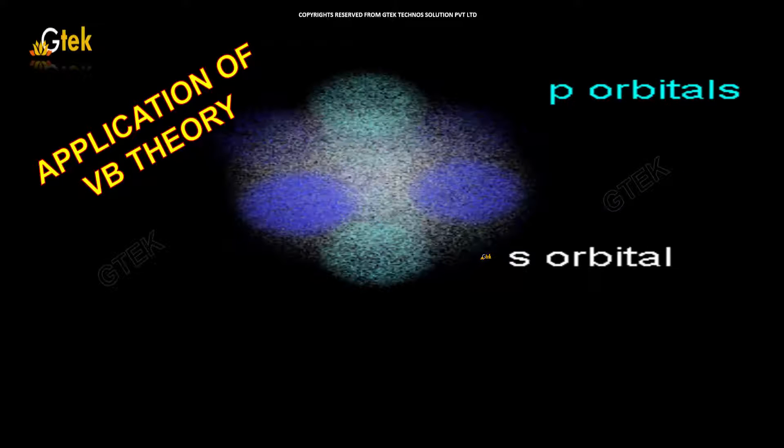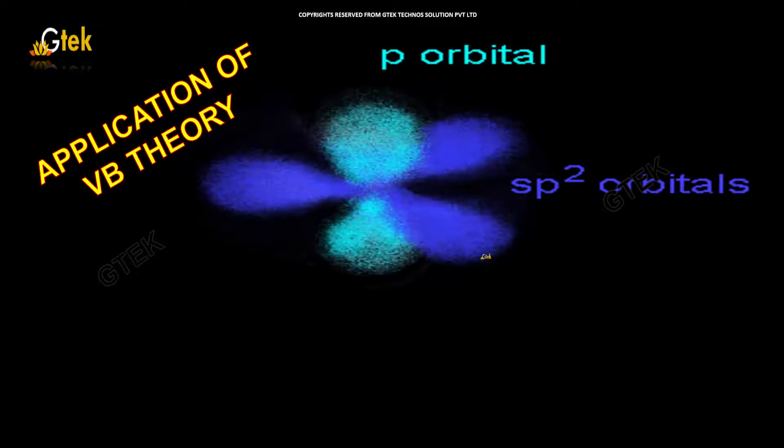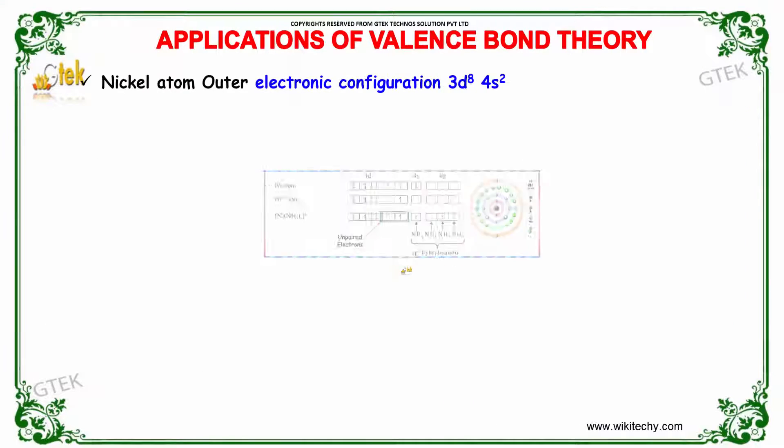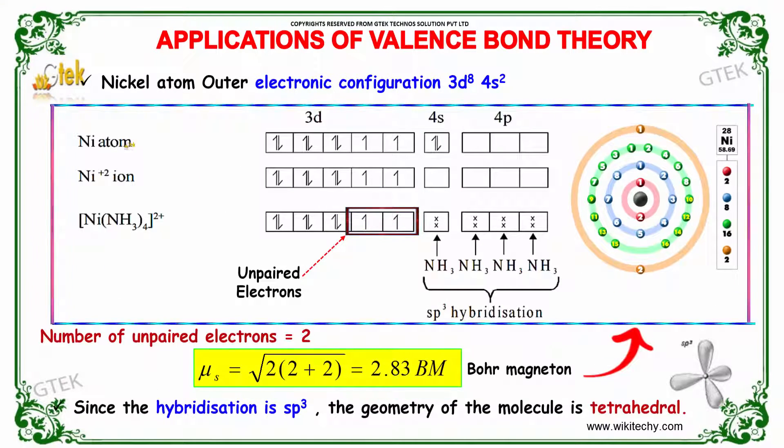Now let's see the applications of valence bond theory. The nickel atom has an atomic number of 28 and mass of 58.69. Here is the electronic configuration of the nickel atom.